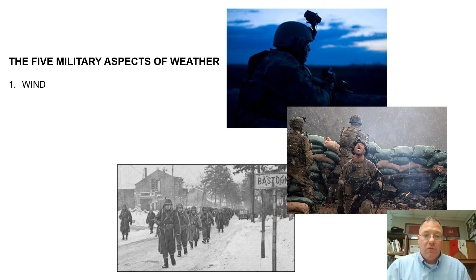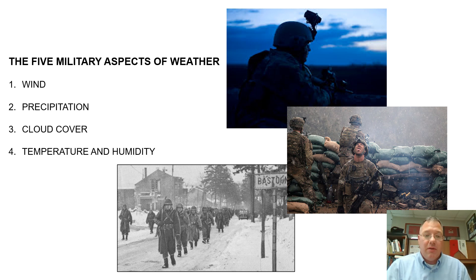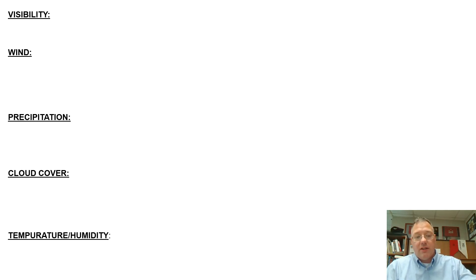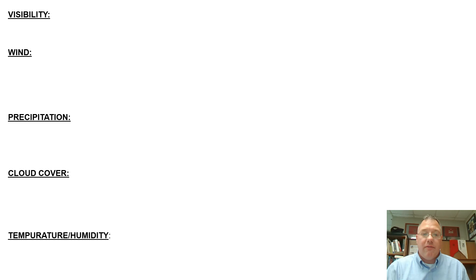The first one is wind; precipitation, that's rain, snow, anything that falls out of the sky; cloud cover; temperature and humidity; and visibility. Go ahead and get a piece of paper and write down these: wind, precipitation, cloud cover, temperature and humidity, and visibility. We'll get more into that when we talk about light effects in the next video, but at least lay those out.